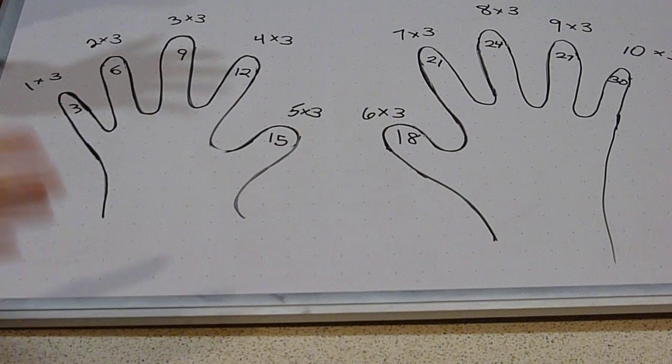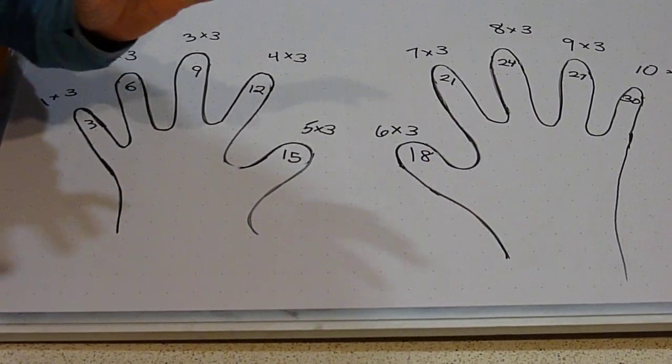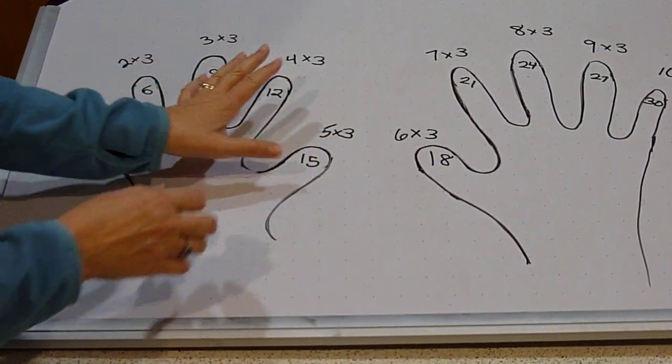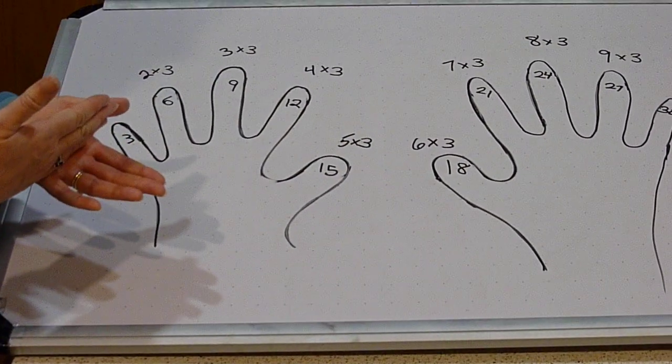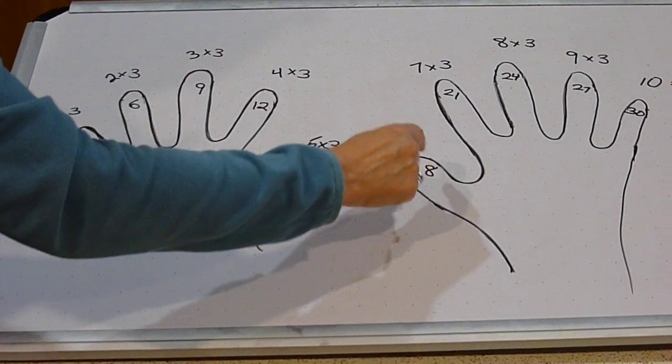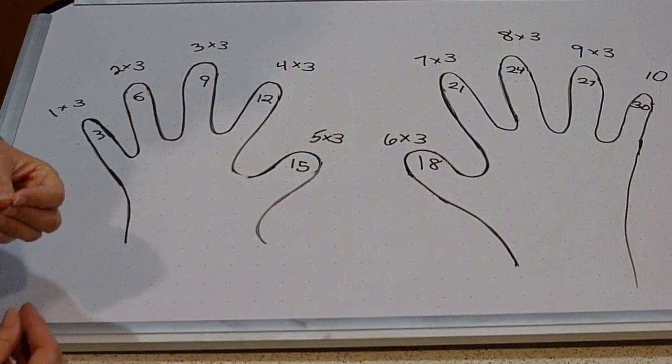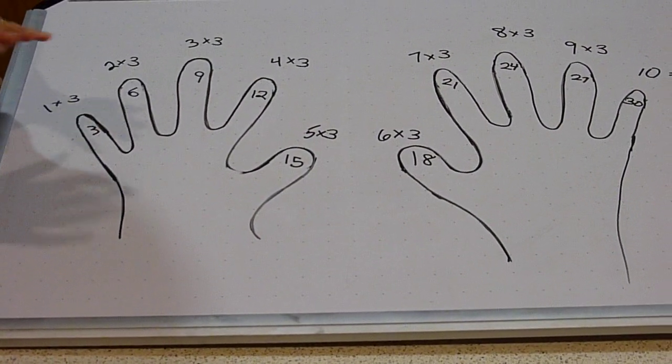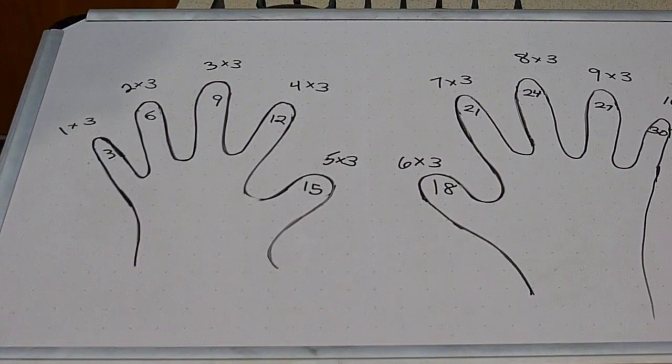What I start out with is I say, look, there's two teen numbers and they're your thumbs. So I say, so look, we know this is finger five. So five times three is fifteen, and six times three is the other thumb. That's the other teen number, eighteen. So as soon as I show them that, they quickly memorize five times three and six times three. So I find that really helps.